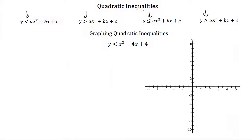The first thing we're going to talk about is graphing a quadratic inequality. Here we have y is less than x squared plus 4x plus 4. To graph this, we're first going to pretend that this is y is equal to x squared minus 4x plus 4, and we're going to graph this line first.